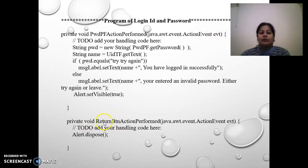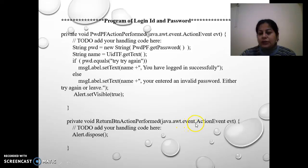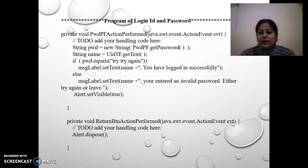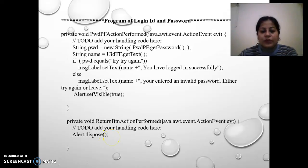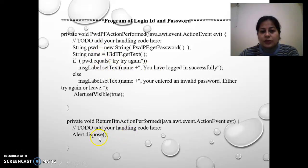Then again I have written private void returnButtonActionPerformed with java.awt.event.ActionEvent, aliased as evt. Inside, alert.dispose() is called, which removes the alert dialog box — so when we want to resume, the alert dialog box is disposed.